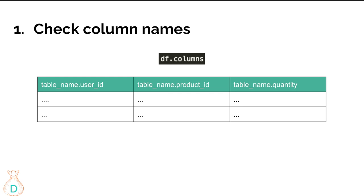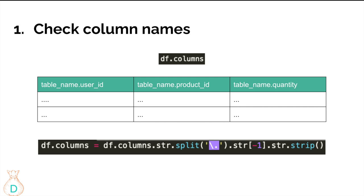For some reason, whenever I run my Hive queries, the dataframe columns always print out as table name dot column name — so it'll be like user_id or product_id but always with a table name in front followed by a dot. So the first thing I do before running any machine learning models is rename my columns to just the actual column names, removing the table name and dot.